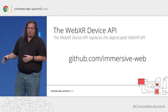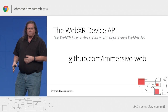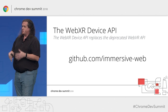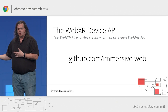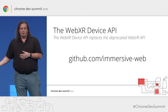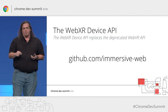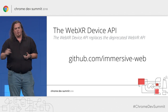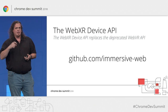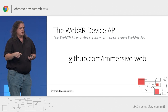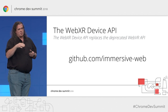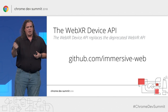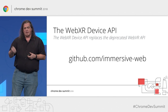The WebXR Device API replaces the old WebVR API and evolves those concepts to expose not just VR but also AR functionality. In true extensible web platform layering, this is really the underpinning only — it lets us connect to those devices, render displays, understand which way they're pointed, and interact with controllers.